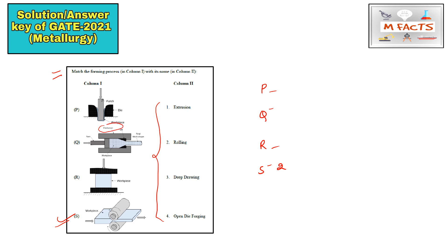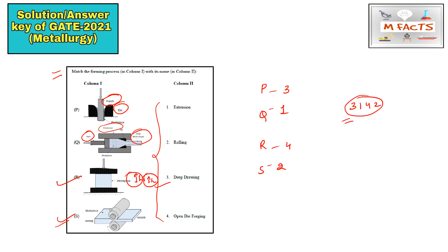Next, you can find a container wall and a ram with a work piece — this is the extrusion case, so Q is 1. For P, they are using a punch and die, which is used in the deep drawing process, so P matches with 3. The remaining one is forging — open die forging — where they reduce height by applying mechanical forces, so R matches with 4. The final code for this matching is 3-1-4-2.